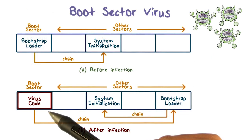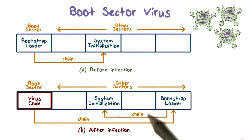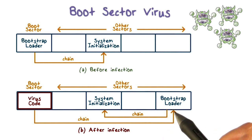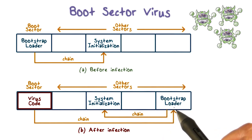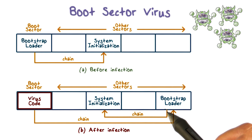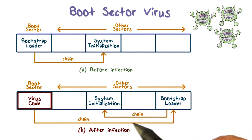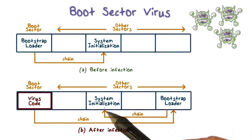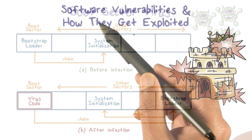After the virus code runs, the boot sector virus should transfer control to the original boot loader so that the system can boot normally — or at least appear to the user that the system boots normally.